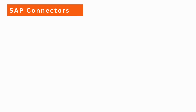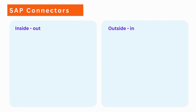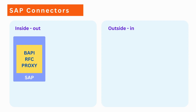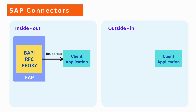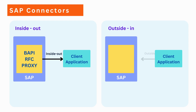Before we get into the details of connectors, we need to understand two main terms. One is inside out, and the other one is outside in. We use inside out when an external application is trying to use the functionality of SAP. We say outside in when SAP is trying to consume the functionality of an external application.